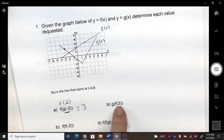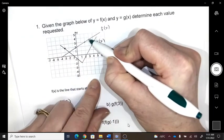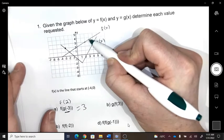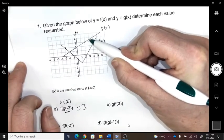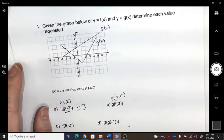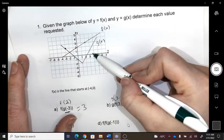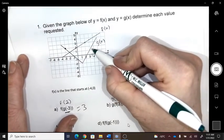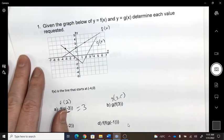f of three. So that would be right here. So three and a half. So g at three and a half would be about right here. So that would be at an output of two.